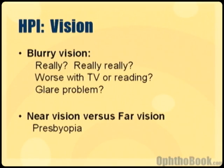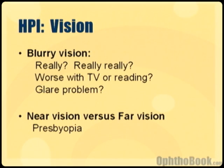With the eye, the big complaint is vision, and there are specific questions you need to ask. Most patients complain of some type of blurry vision. The big question is how blurry is it? For some people, blurry vision means their eye is a little dry and they're seeing 20/25 instead of 20/20. For others, blurry vision means no light perception — so it's a relative term and you need to tease that out.